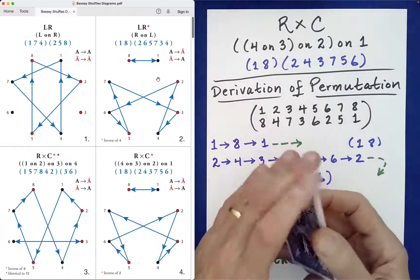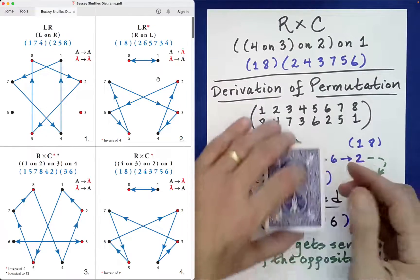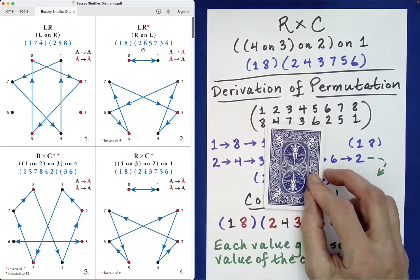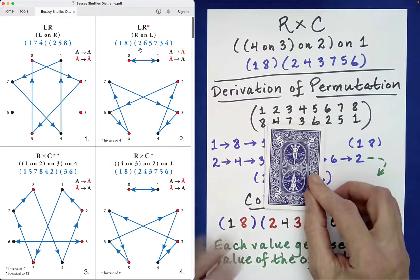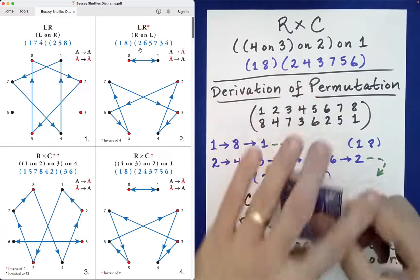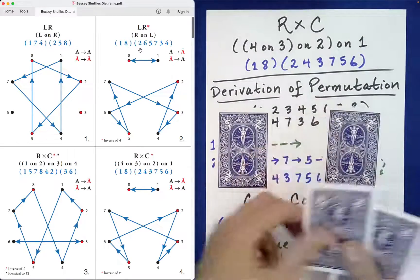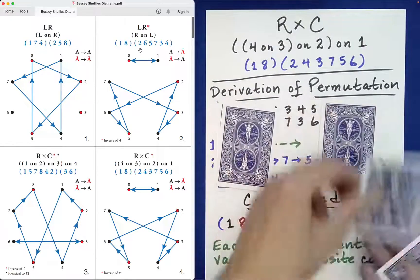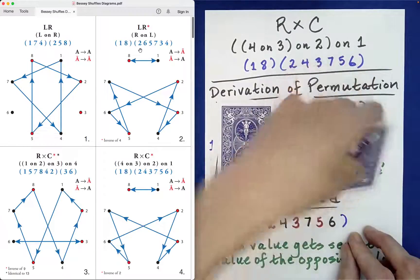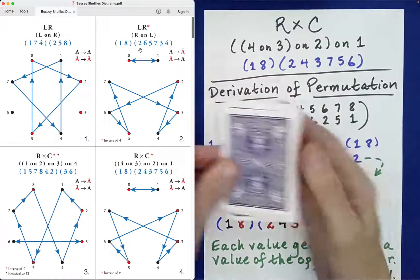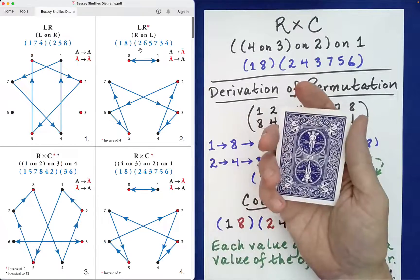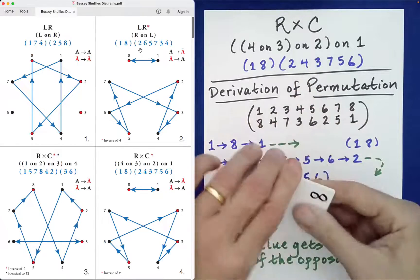So the claim now is that if we perform the shuffle up above, let me just highlight that again up here, this one. Which shuffle was that one? Well that's just a left right on which we're stacking right on left. Okay just going like that. Well apparently we should get back to the original ordering of the packet.